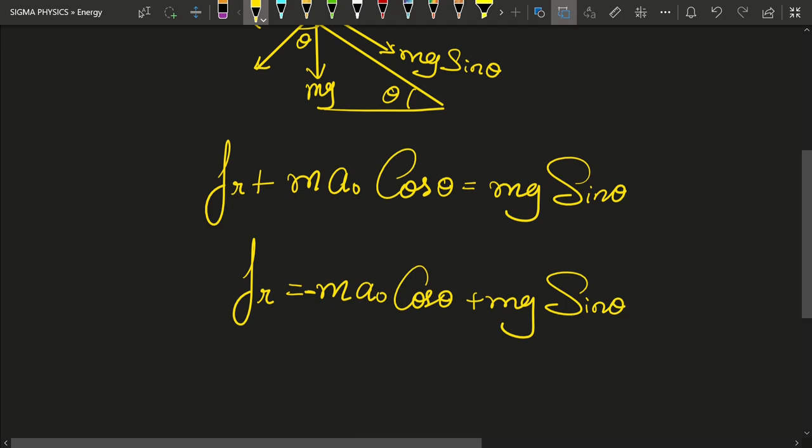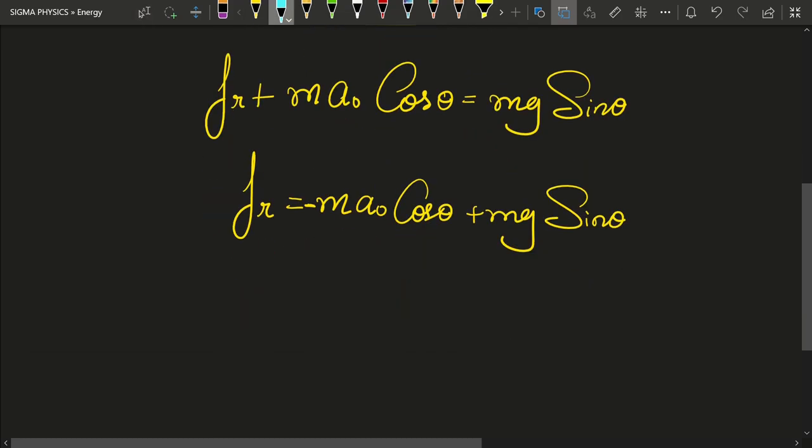If that is the friction force, then the work done by friction, let me call it W_fr, would obviously be equal to fr dot x.